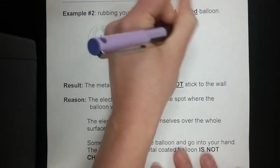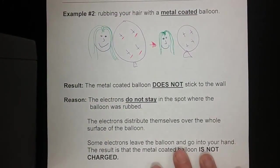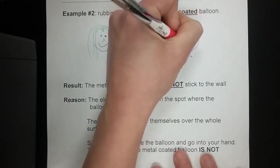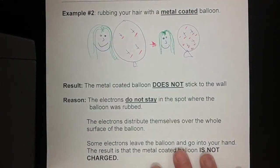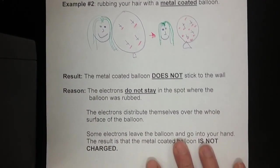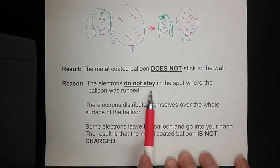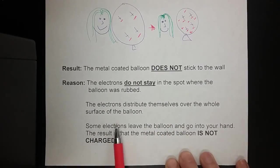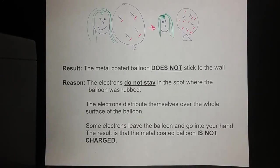Your balloon still has 1, 2, 3, 4 positives, and the negatives transferred on from the rubbing. But because it's made out of metal, they're going to spread out throughout the balloon. The result is that the metal-coated balloon does not stick to the wall because the electrons distribute themselves evenly throughout the entire balloon — because, remember, like charges repel each other. This is how insulators and conductors work.